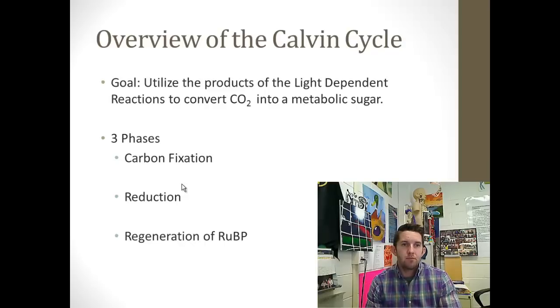When we're talking about fixing carbon, we're talking about grabbing it out of the atmosphere and converting atmospheric carbon into a more tangible molecule, like a sugar, that the plant can utilize for energy. The second phase is reduction. Reduction is a gain of electrons. We talked about reducing power created by the light reactions from NADPH. And finally, regeneration of RUBP, the carbon dioxide acceptor. We have to regenerate it for it to be a cycle.